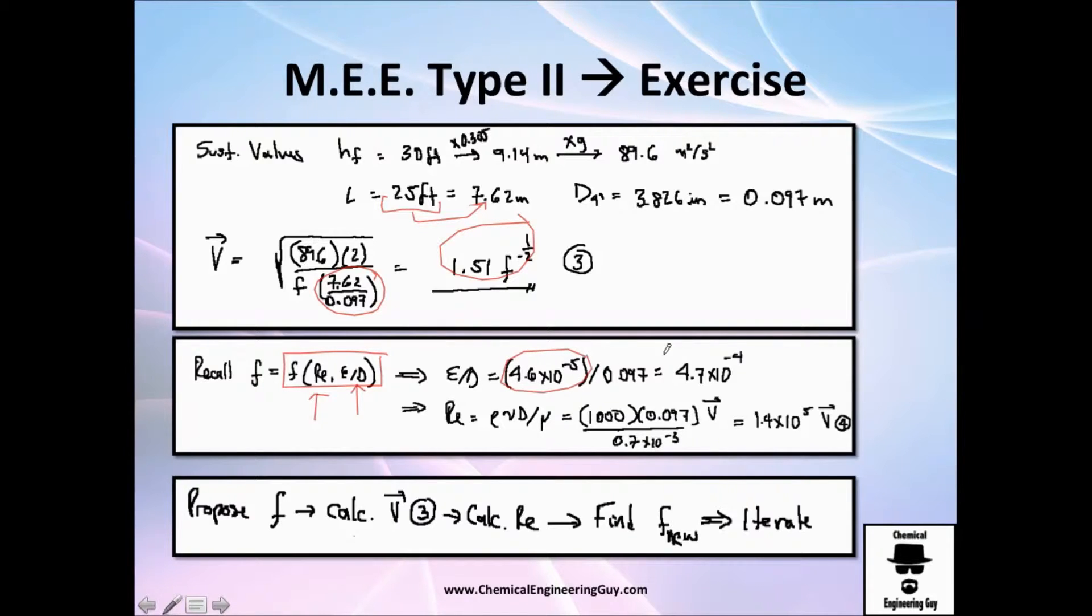Recall that the friction factor or factor of friction is function of Reynolds and relative roughness. Let me calculate that. Relative roughness is the roughness divided by the diameter, which I got to be this one right here. And the Reynolds number, I cannot find velocity, but I can substitute everything in function of velocity. So let me explain to you what is my idea. I'm going to propose an F value. Then I'm going to calculate velocity from here. Once I got velocity, I can calculate the Reynolds number from here. And once I got the Reynolds number, I can find the new friction factor in the Moody's diagram. And if this friction factor is pretty near to the friction factor I guessed, then I'm done. If it's very far away, then I need to iterate.